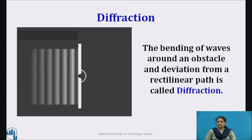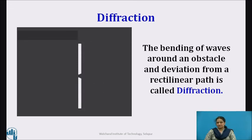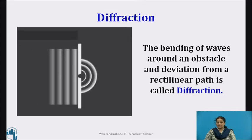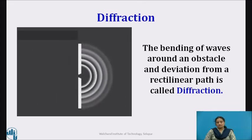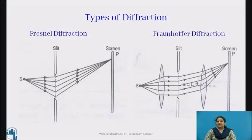Before starting the session, let us memorize some basic terms, i.e. what is diffraction. Diffraction is the bending of waves around an obstacle and deviation from a rectilinear path. There are two types of diffraction. In Fresnel diffraction, the source and screen are effectively at finite distances from the obstacle.